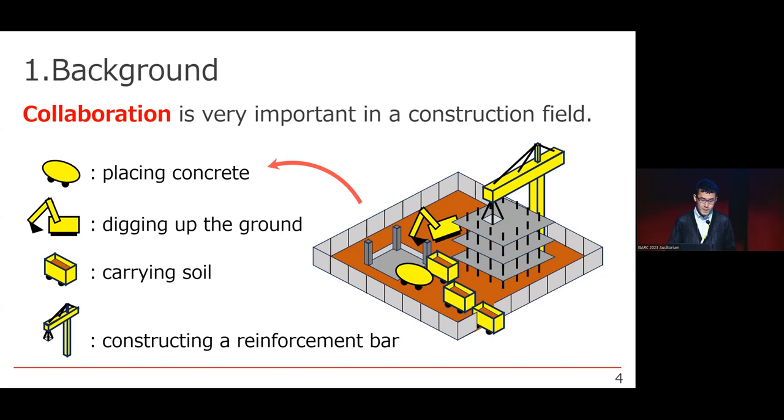This is because we have to make a big architecture by construction. This is an example of a construction field. A cement mixer truck is pouring concrete, a crane is carrying some steel, an excavator is digging the soil, and some trucks are carrying the soil. And quite naturally, these machines are controlled by human operators.